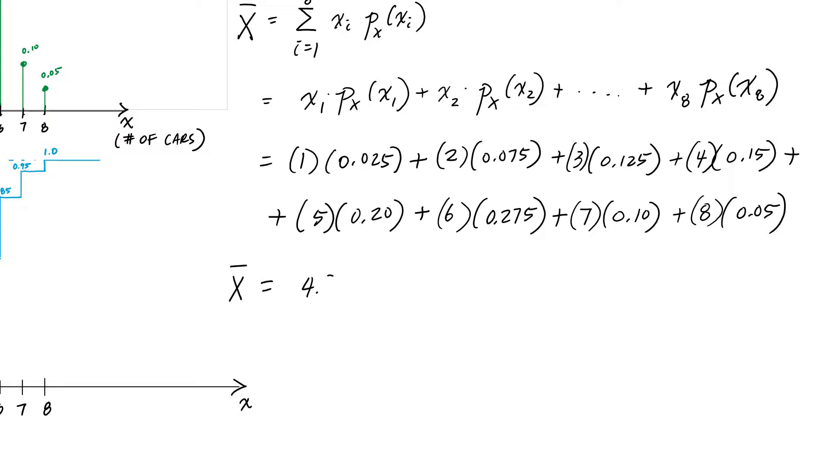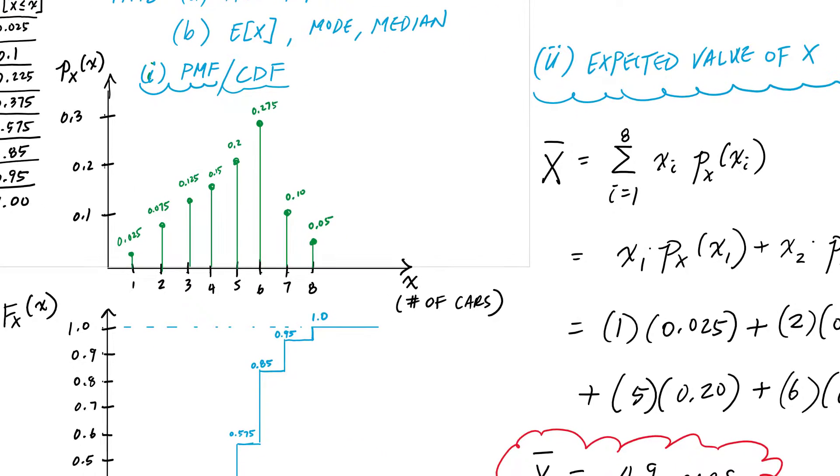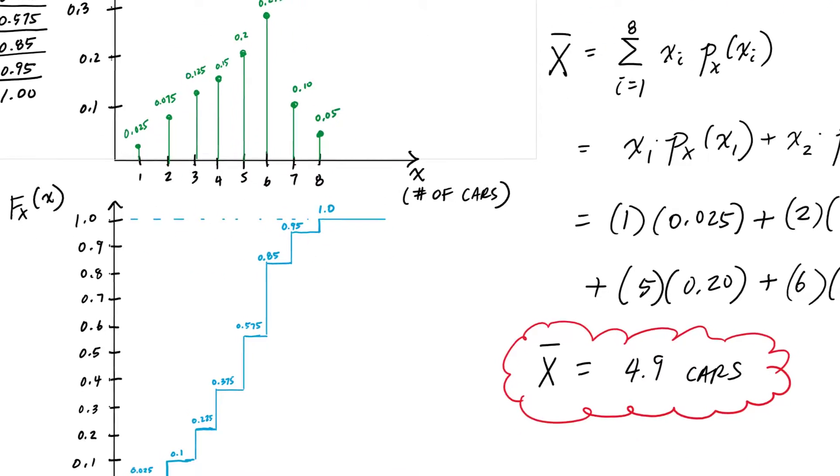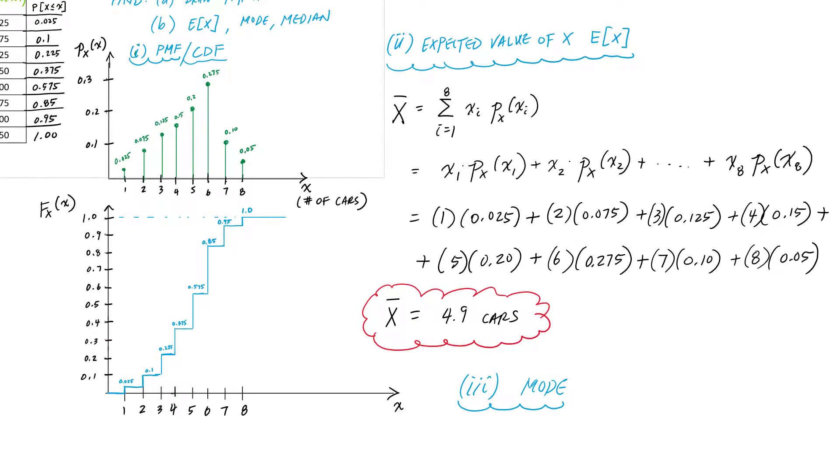The mode is the outcome associated with the highest probability. In this case, if I look here, that is quite simply the highest probability, this 0.275 value here.